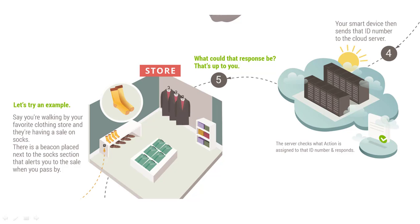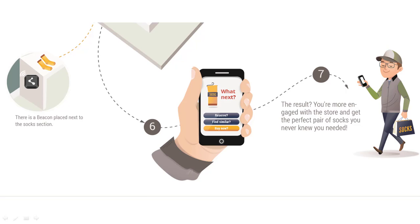There is a beacon placed next to the sock section that alerts you to the sale when you pass by. Your smart device then sends that ID number to the cloud server. The result: you're more engaged with the store and get the perfect pair of socks you never knew you needed.